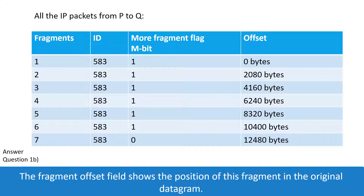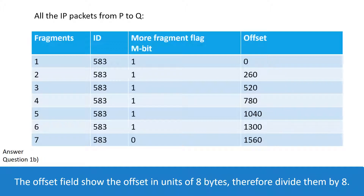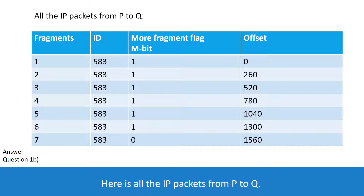The fragment offset field shows the position of this fragment in the original datagram. The offset field shows the offset in units of 8 bytes, so divide by 8. Here are all the IP packets from P to Q.